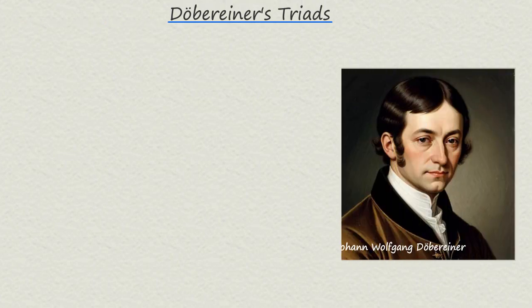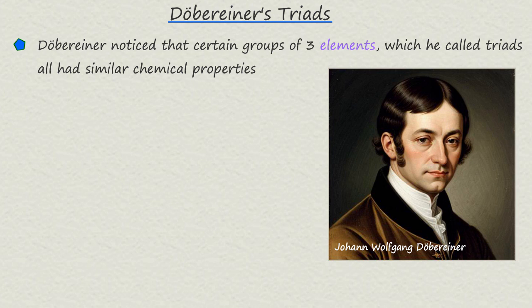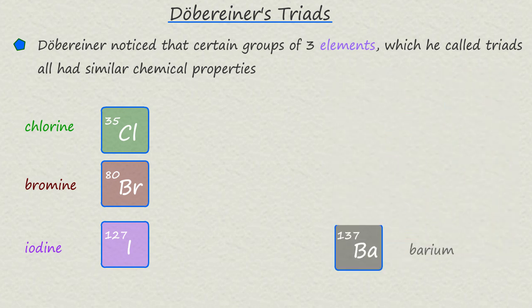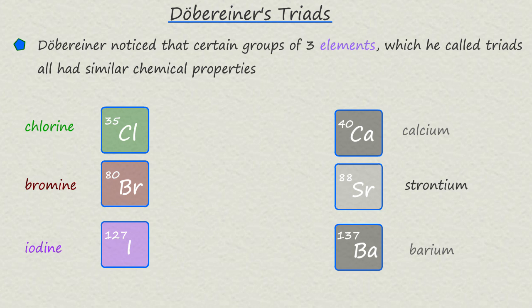Johan Wolfgang Döbereiner was the scientist who noticed patterns among groups of elements. He observed that certain groups of three elements, which he termed triads, had similar chemical properties. For example, one of Döbereiner's triads contained the three elements chlorine, bromine and iodine, which today we know are three of the halogens in group 7 of the periodic table. Another one of Döbereiner's triads contained the three elements calcium, strontium and barium, which are all found in group 2 — the alkaline earth metals — in the modern periodic table.